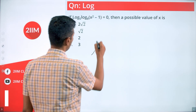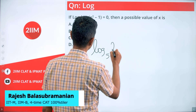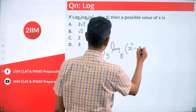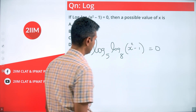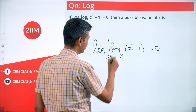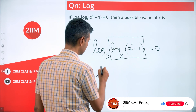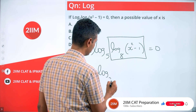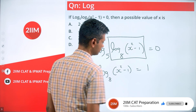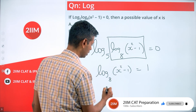log base 5 of (log base 8 of (x squared minus 1)) equals 0. For log something to base 5 to equal 0, that something must be 5 to the power 0, which is 1. So log base 8 of (x squared minus 1) should equal 1, meaning log something to base 8 is 1.